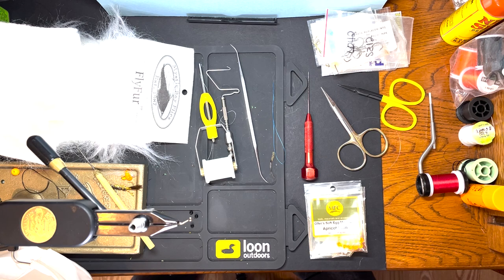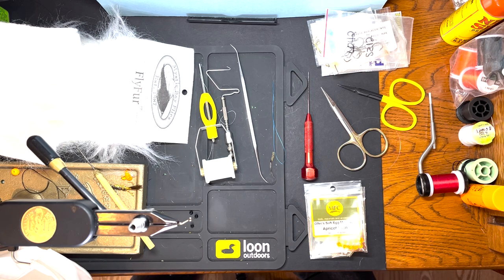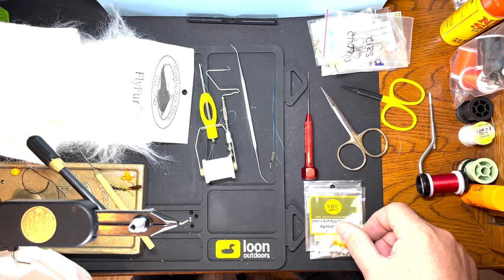egg sack or spawn sack. This one imitates the sucker spawn. In the spring, suckers run at the same time as the steelhead, and sucker spawn or yellow egg clumps is an important fly to have. So here's how you tie a sucker spawn egg cluster.